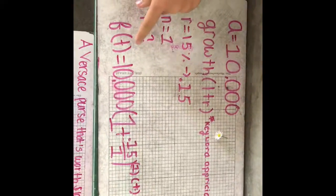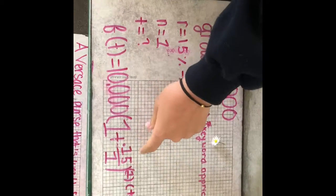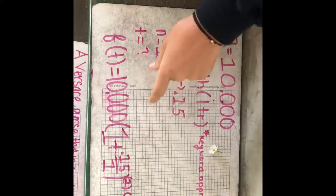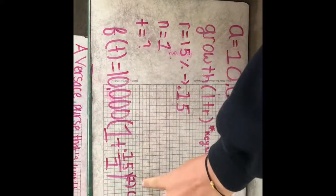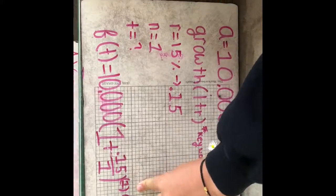So the equation would be f(t) = $10,000(1 + 0.15/1)^(1t).